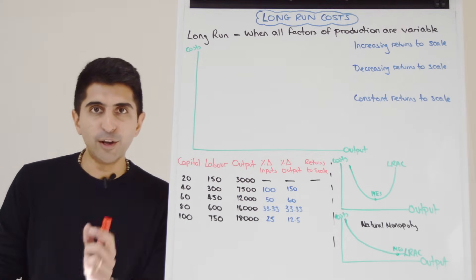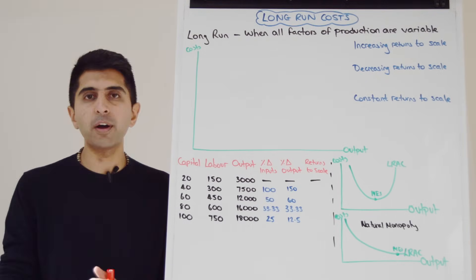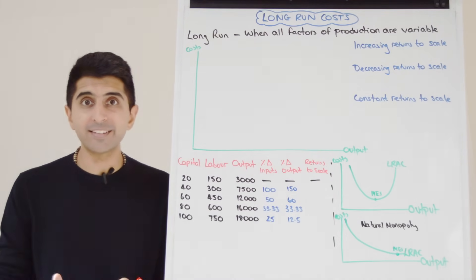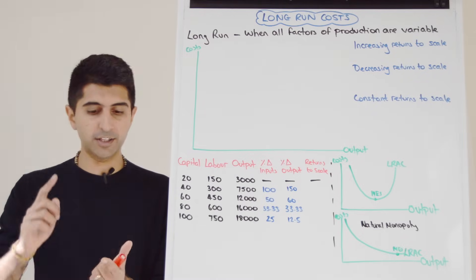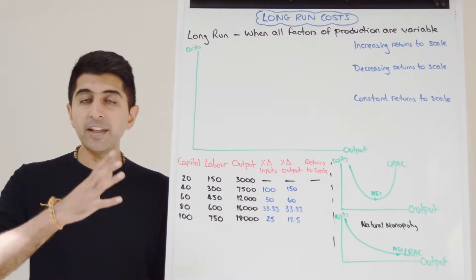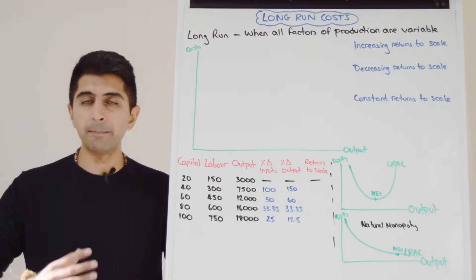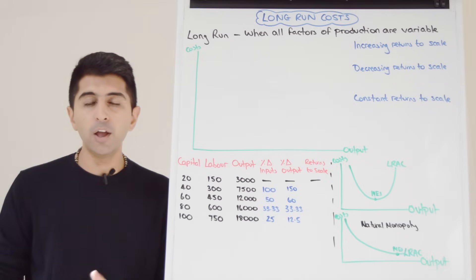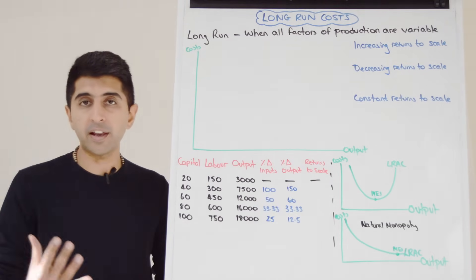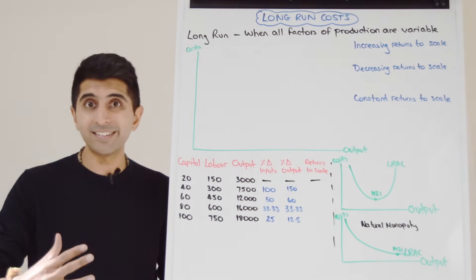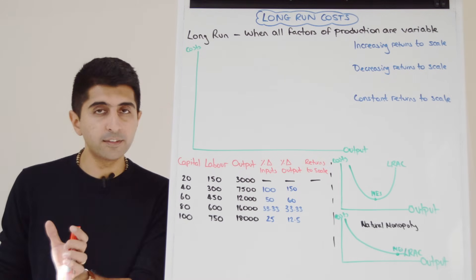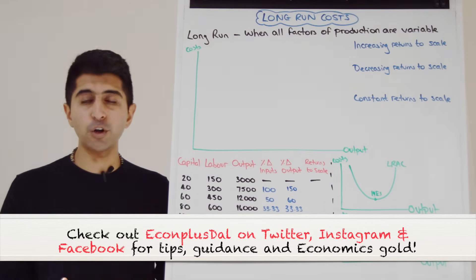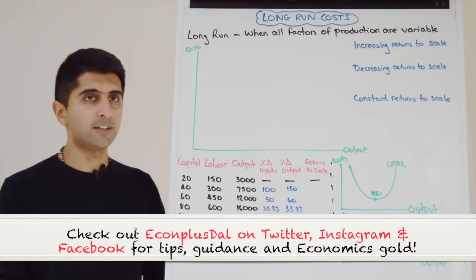In this video we're going to look at long run costs. Remember that the long run is a period of time where all factors of production are variable. So businesses can increase any of their factors of production — land, labor, capital, and enterprise. When they do so we call that scale. The business is scaling up, and therefore the long run is all about returns to scale. The shape of the long run average cost curve is due to returns to scale.